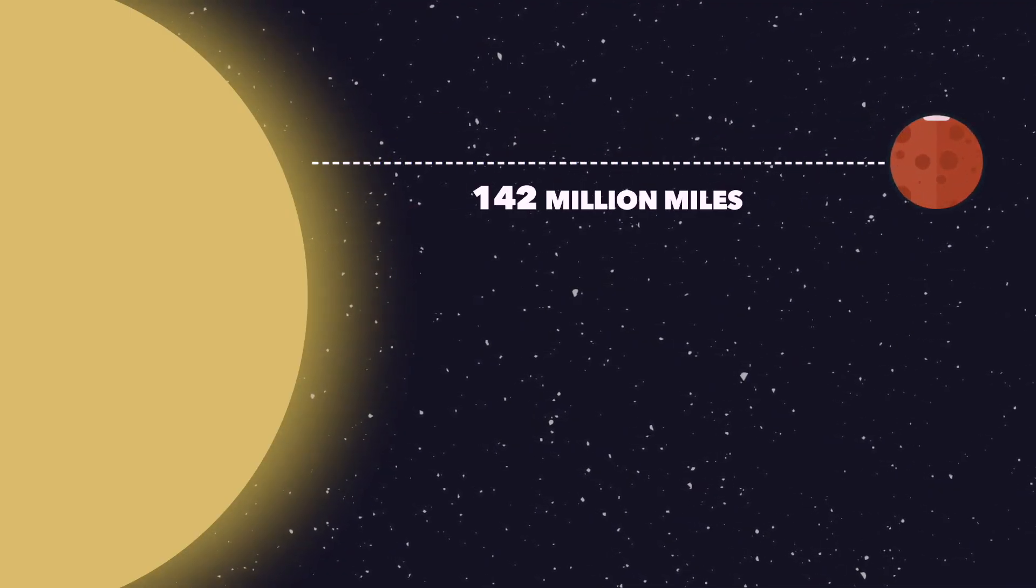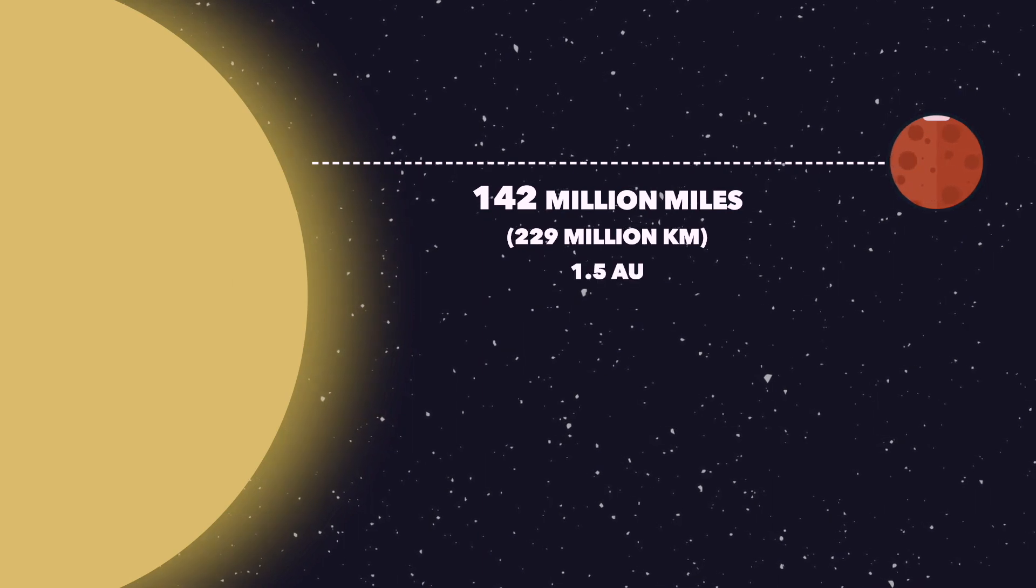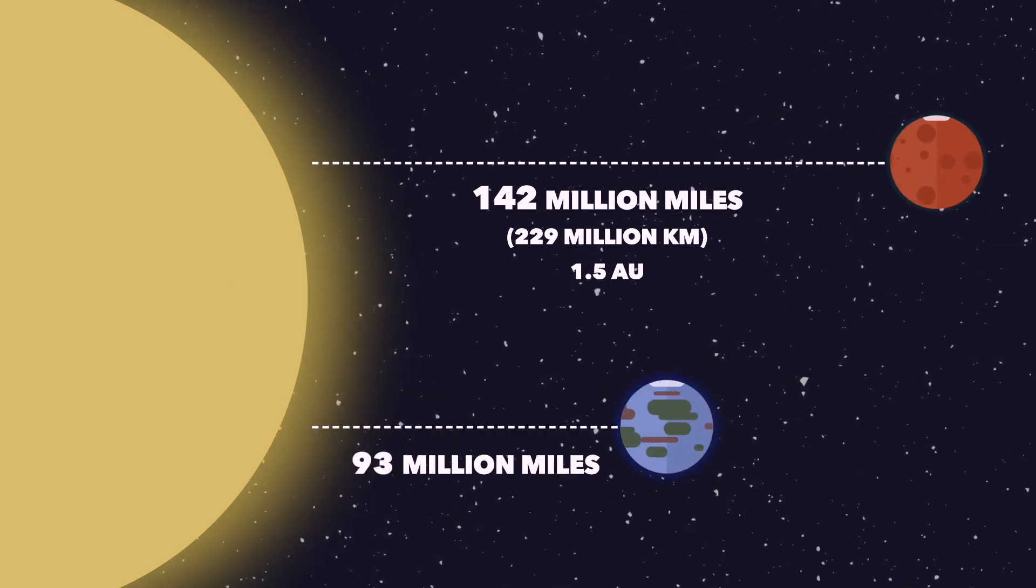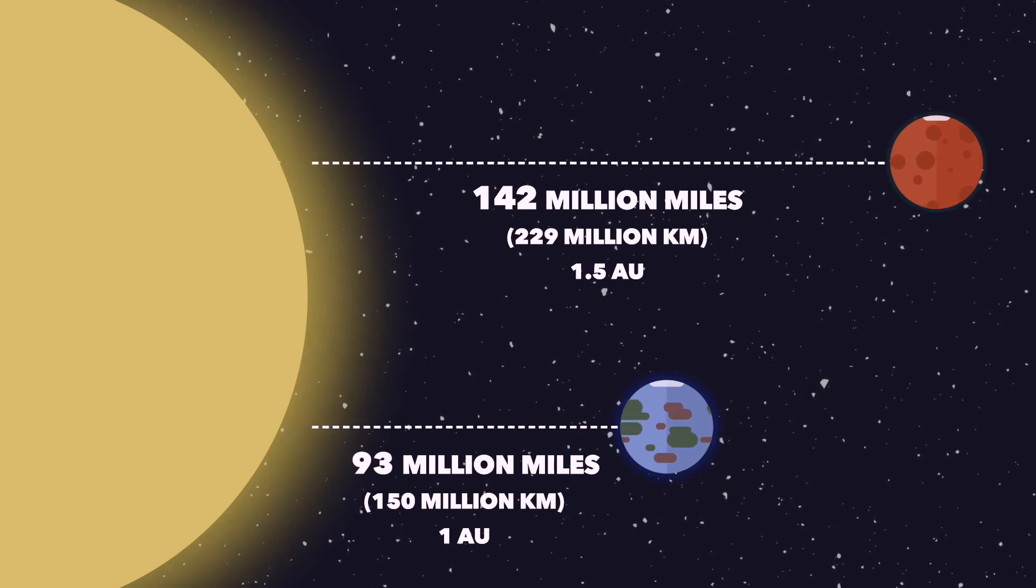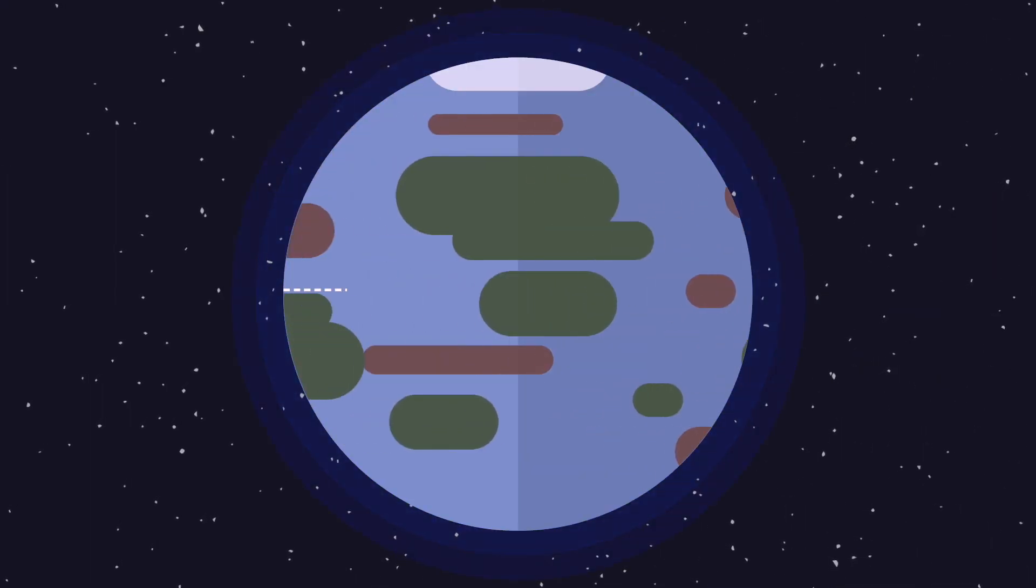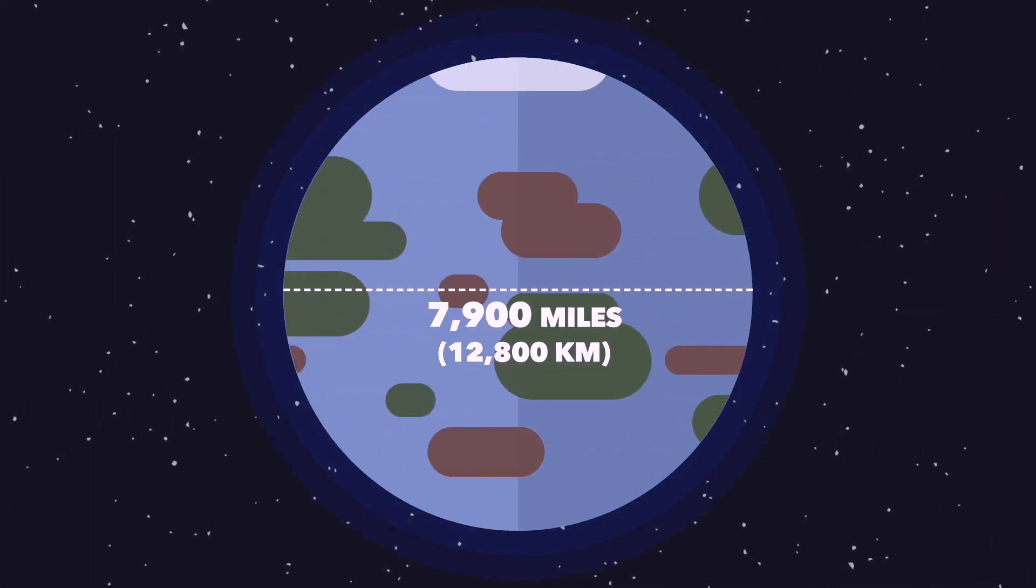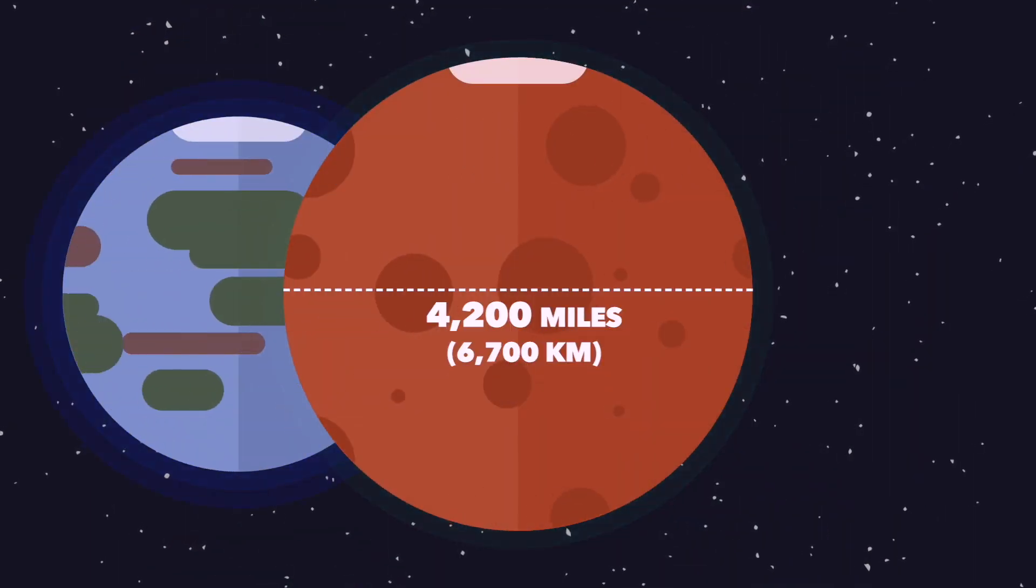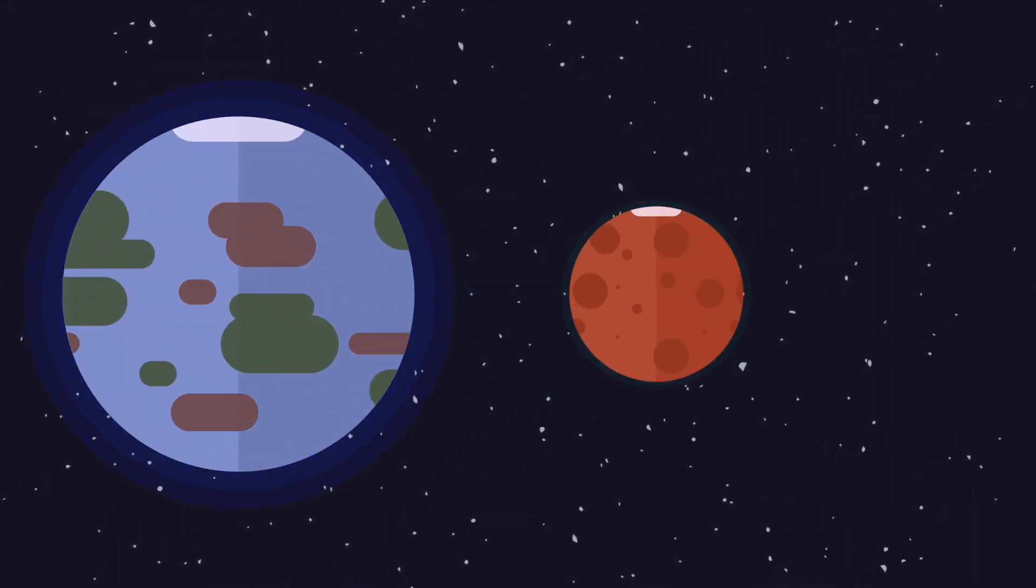Fourth from the sun, Mars is about 142 million miles away, or around one and a half astronomical units. Earth is just 93 million miles from the sun, or one AU. And while Earth is a bulky 7,900 miles across, Mars is just around 4,200 miles, about half the size of Earth.